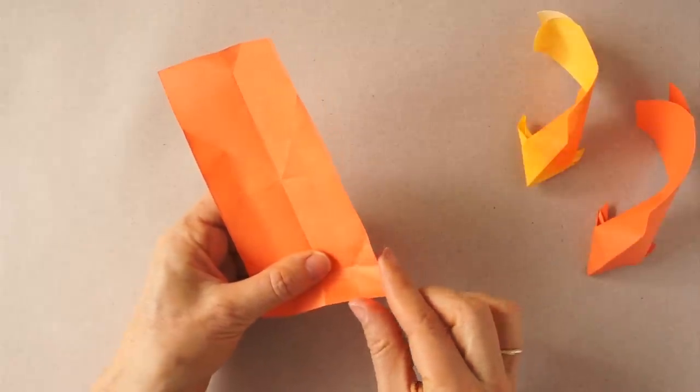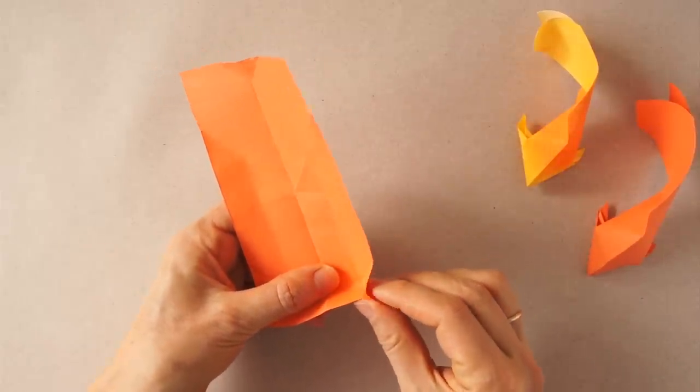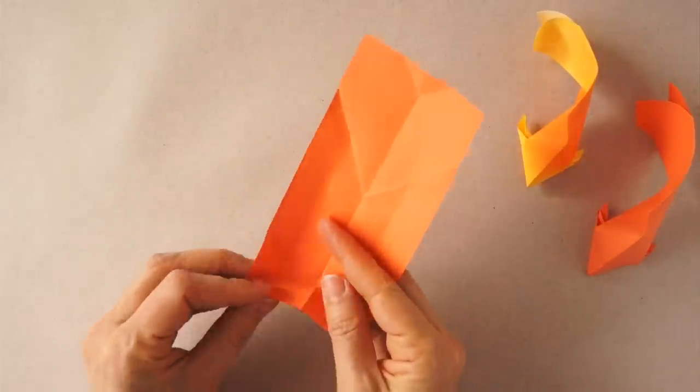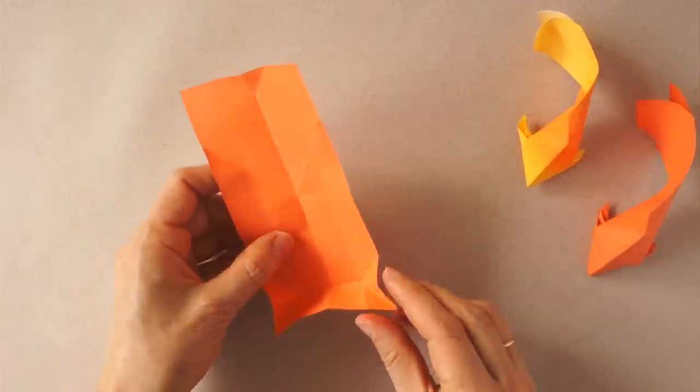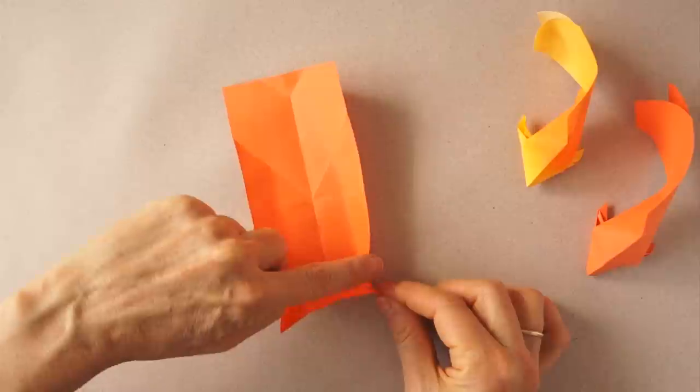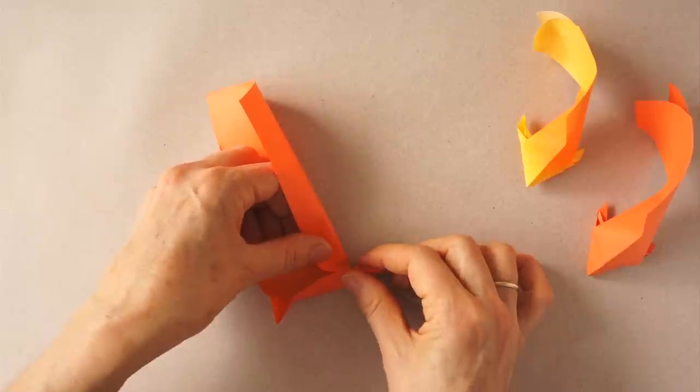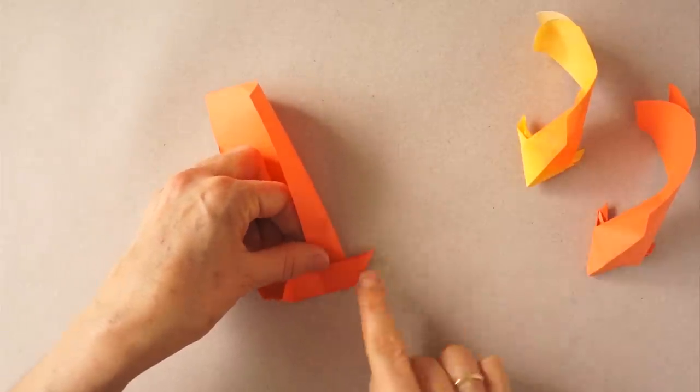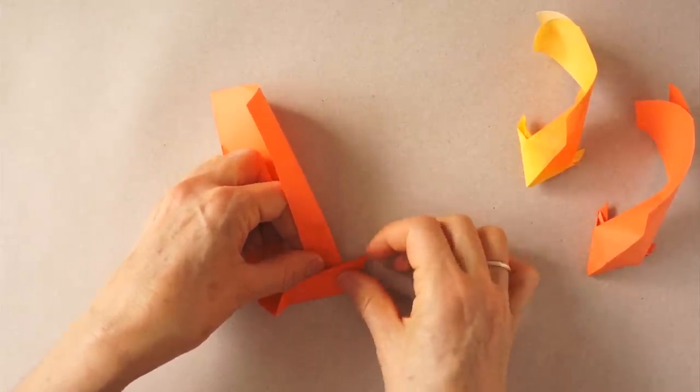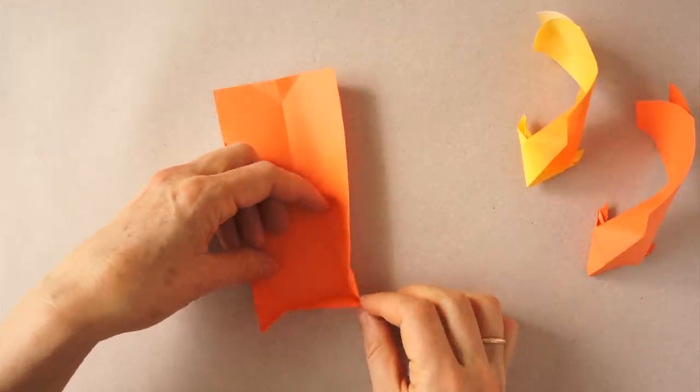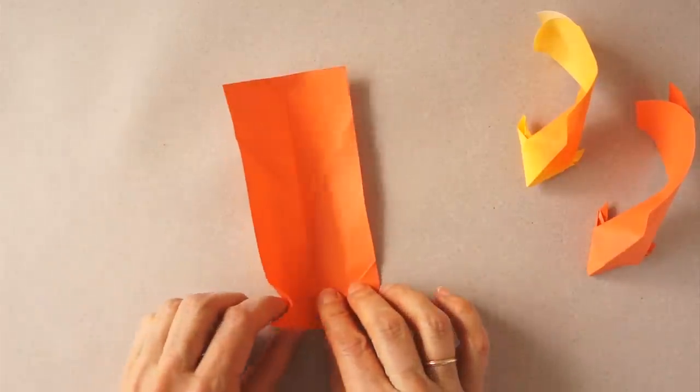We are going to pinch the corners using existing folds. We are going to bring this edge toward the center. We already have the fold. Press flat only on this area. Repeat on the left side.